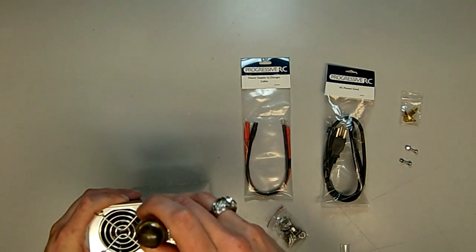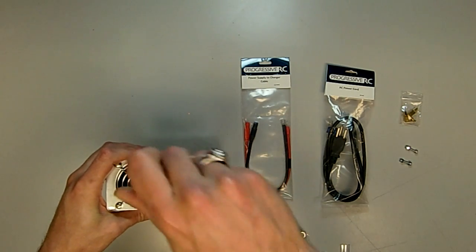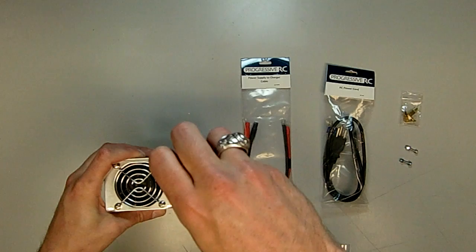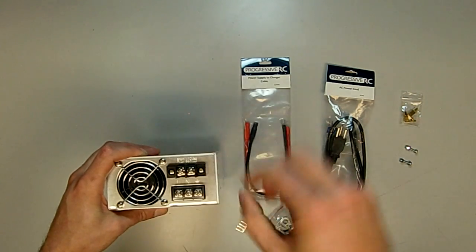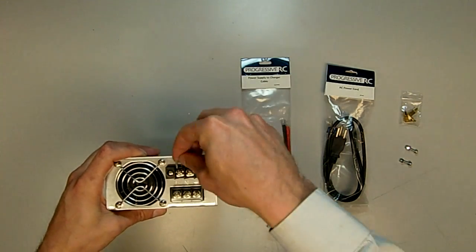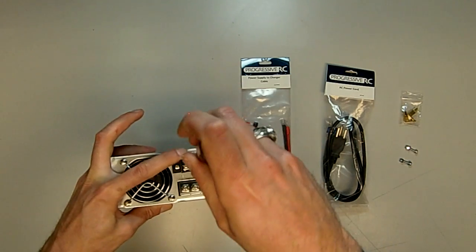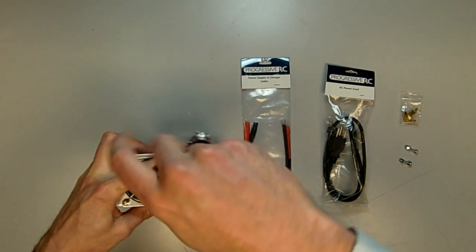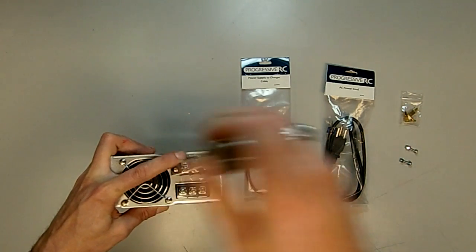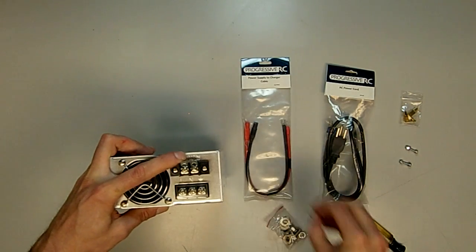To install it you'll simply loosen the screw terminals which are here on the top back of the unit, install the jumper, and then tighten these terminals back down. Then the plastic protective cap can be reinstalled.